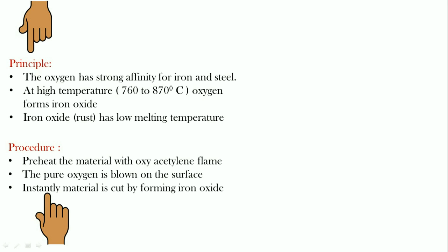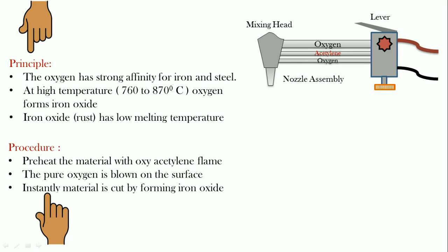Let's look at the design of the torch used for cutting purposes. The torch has levers for the supply of acetylene and oxygen, and there is one more lever used to supply pure oxygen. There are two small pipes used for getting the oxyacetylene flame for preheating purposes. The pipe of bigger size is used to supply the pure oxygen into the flame for the instant formation of iron oxide.